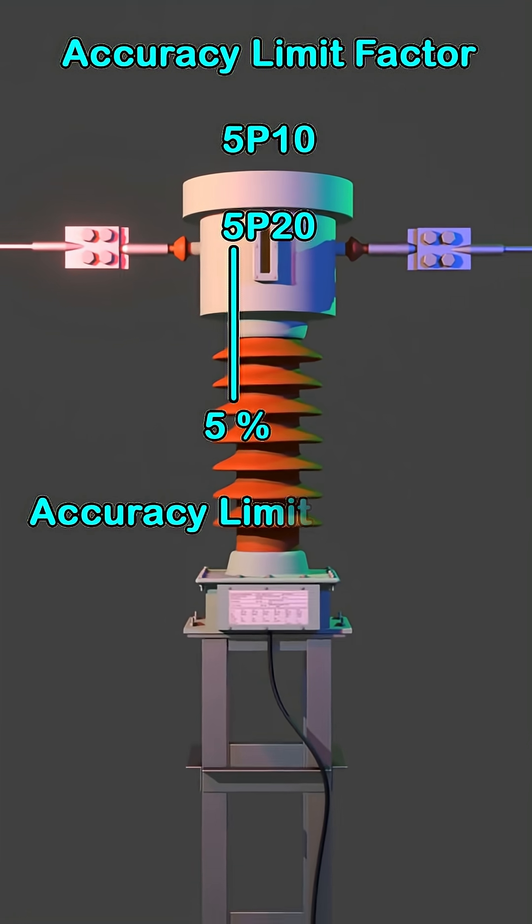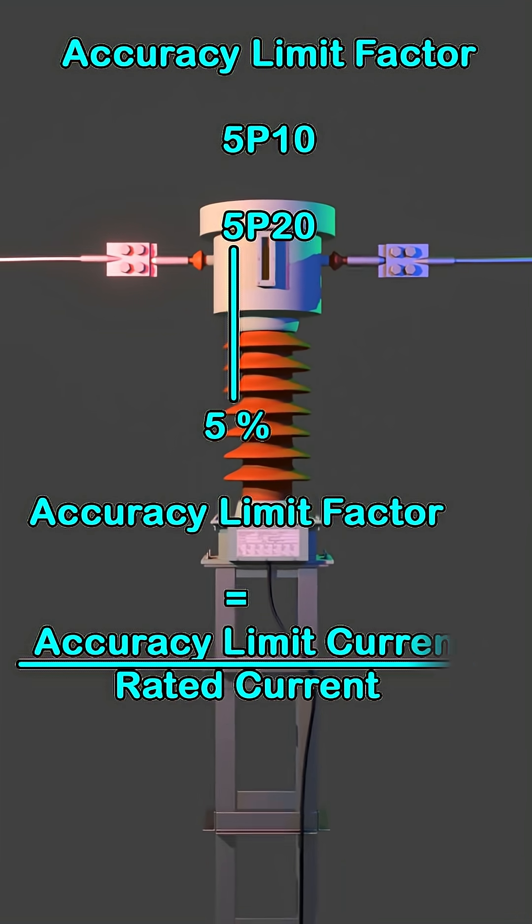Accuracy limit factor equals accuracy limit current divided by rated current of the CT.